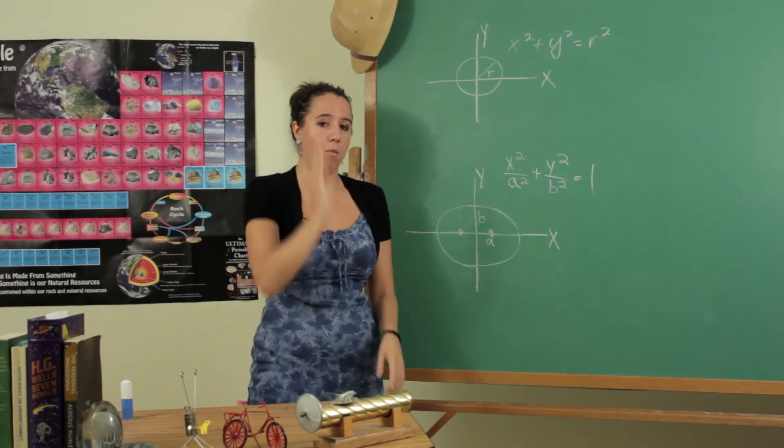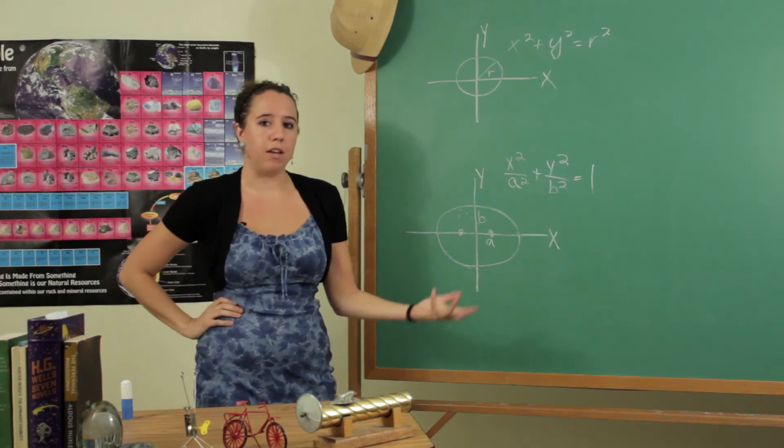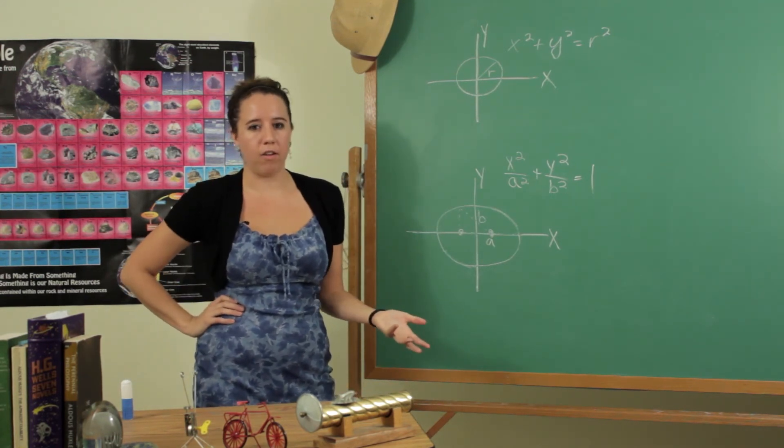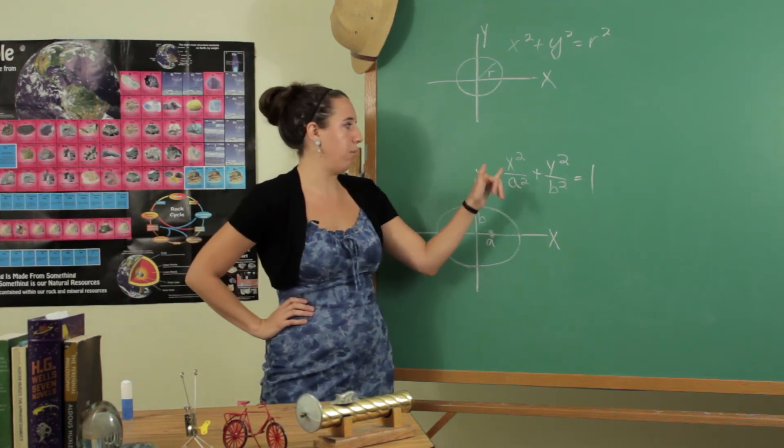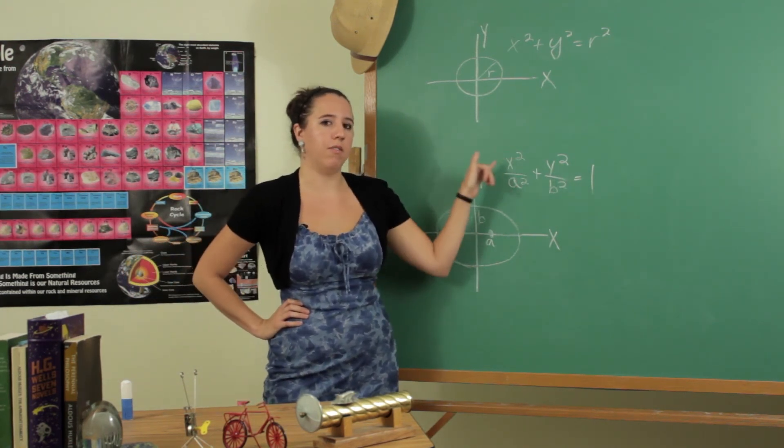So if you want to create an equation for an ellipse that's moved somewhere else or that's turned so that the long axis is in the y direction, it's really easy to do. It's a little bit outside of our scope right now, but it basically just involves subtracting constants from these two terms.